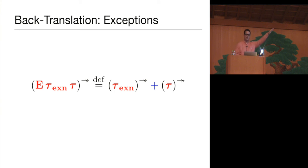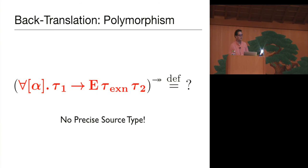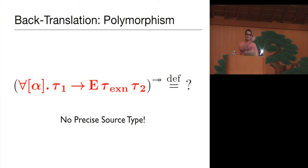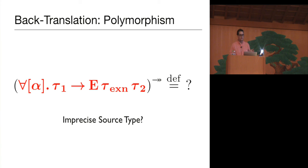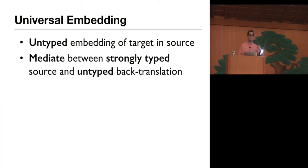If our target language didn't have exceptions, this would be enough — a well-typed embedding of our target language in our source language. But let's look at polymorphism. The problem is there's no type in our source language that precisely captures the polymorphic function type of the target language. However, the polymorphic type isn't actually at the boundary between source programs and the target language, so we don't need to precisely capture this interface. Instead, we use an imprecise type to simulate the behaviors of polymorphic code — a bigger type that has more possible behaviors but can encapsulate all the behaviors of this polymorphic function type. Specifically, we use dynamic typing in our source language, which I call a universal embedding: an untyped embedding of the target language in our source for our back translation.